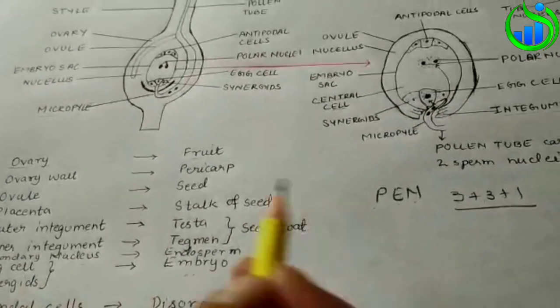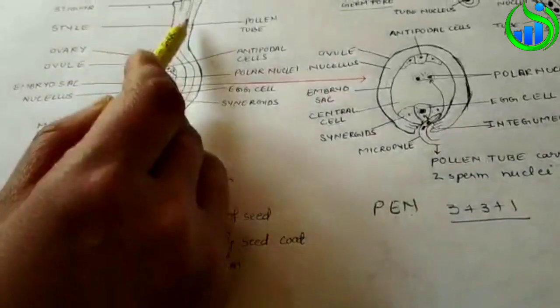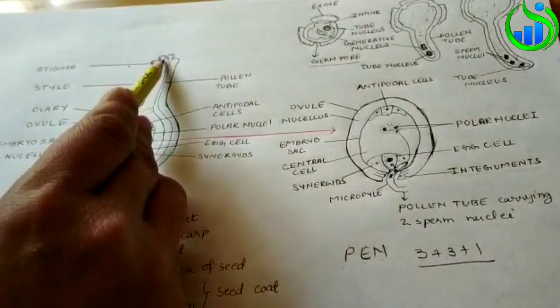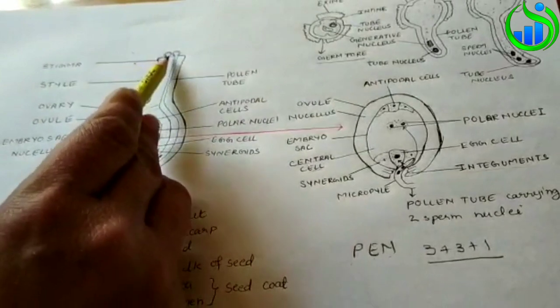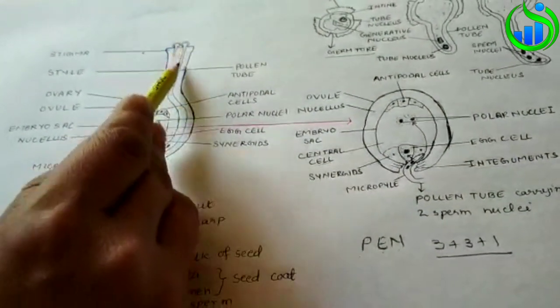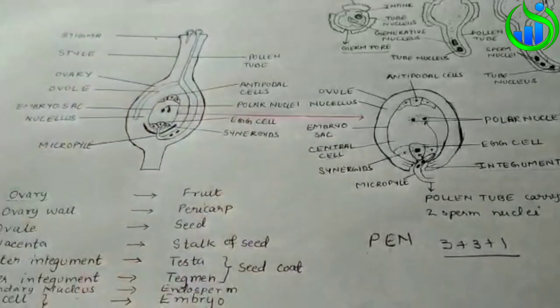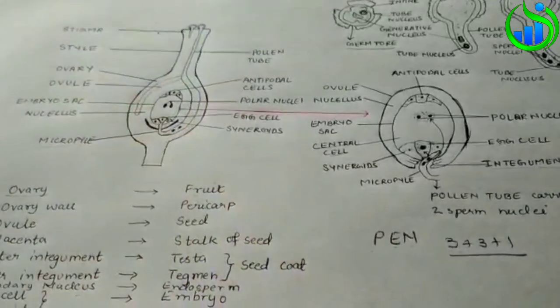The pollen-pistil interaction. The pollen grain in suitable conditions, the same species. The germination starts. The pollen germination is species specific.